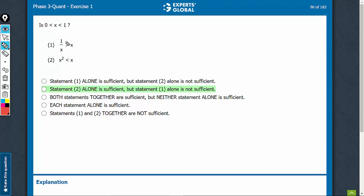Is x between 0 and 1? 1 upon x greater than x is possible for x is equal to 0.2, a value between 0 and 1, yes, but it is also possible for big negative values of x, such as x is equal to negative 5.